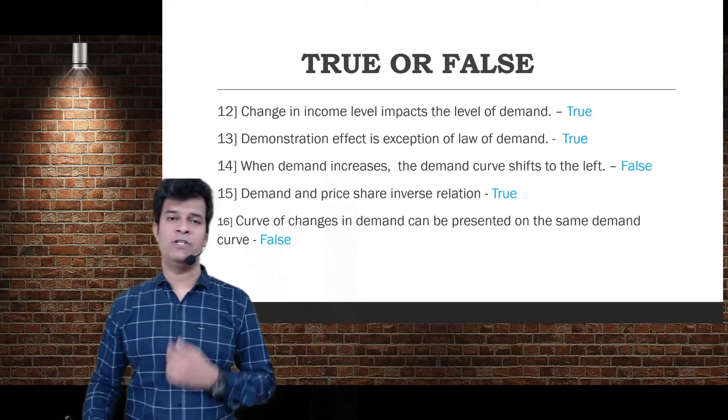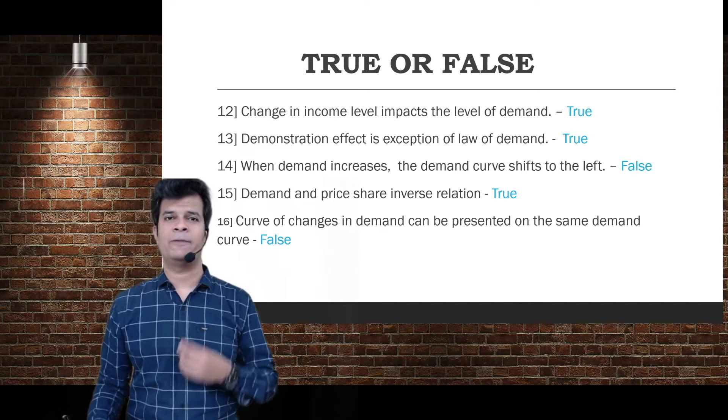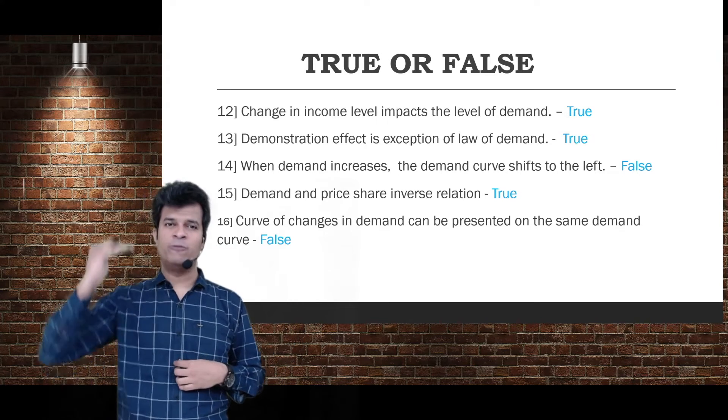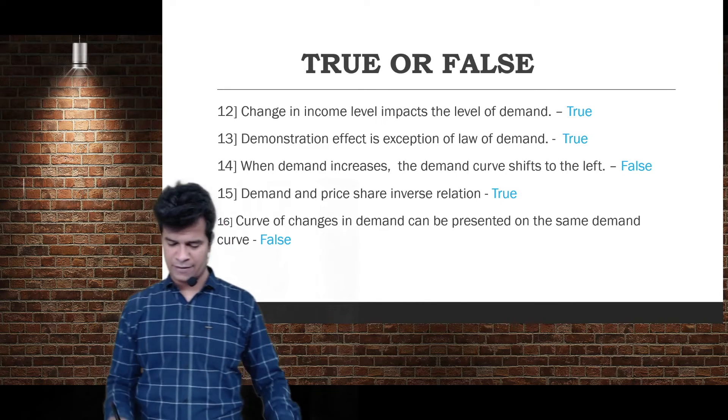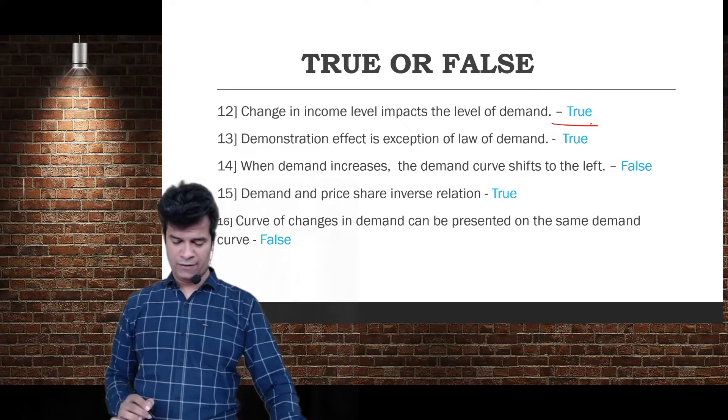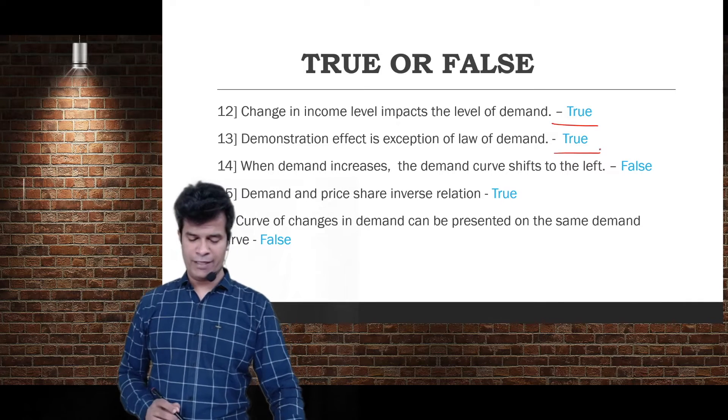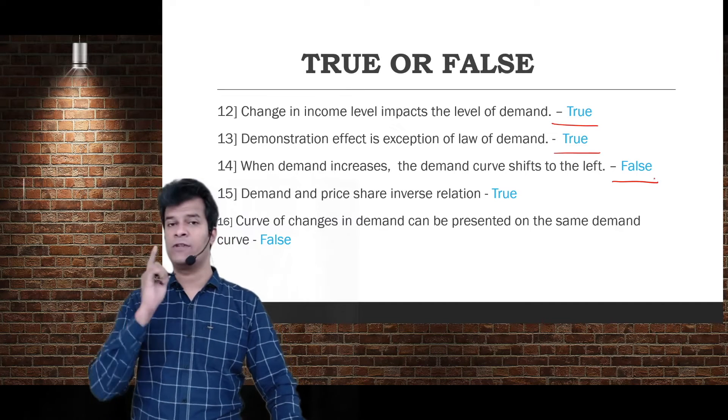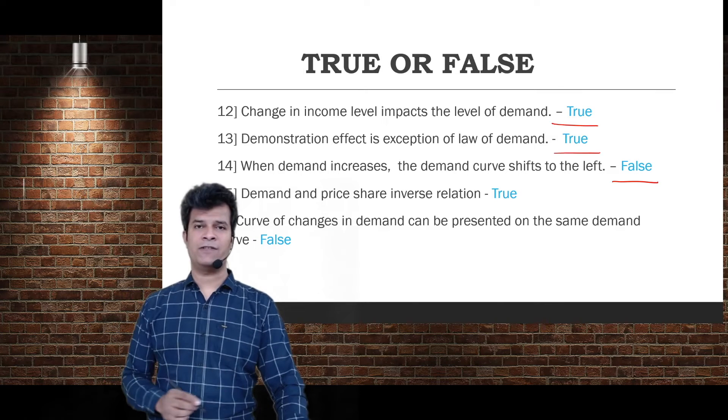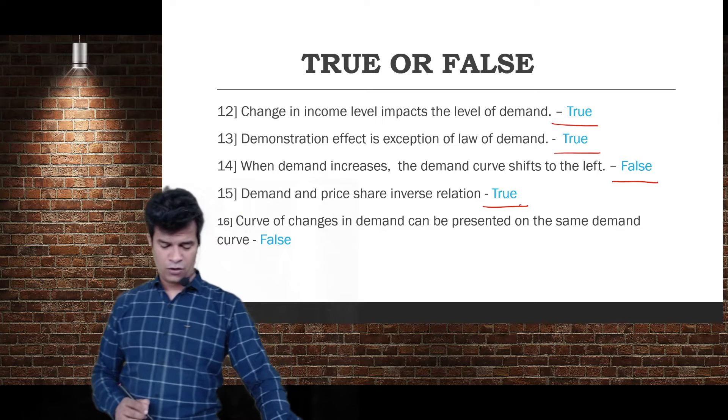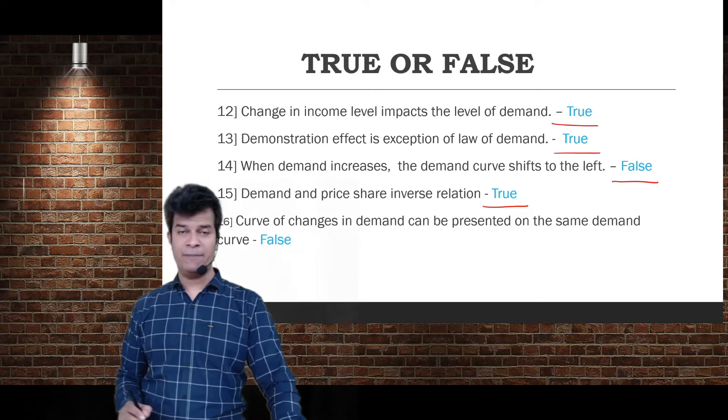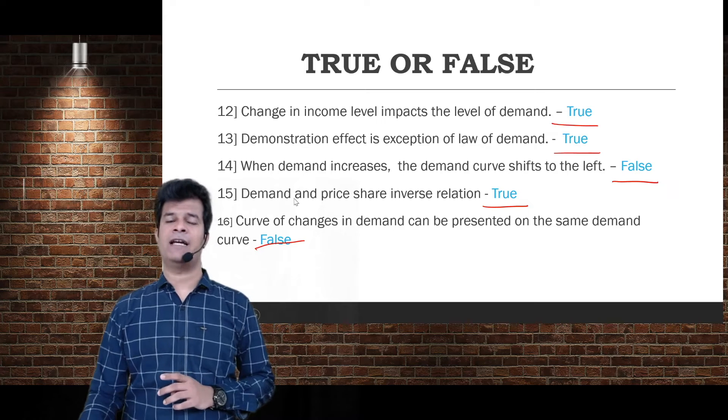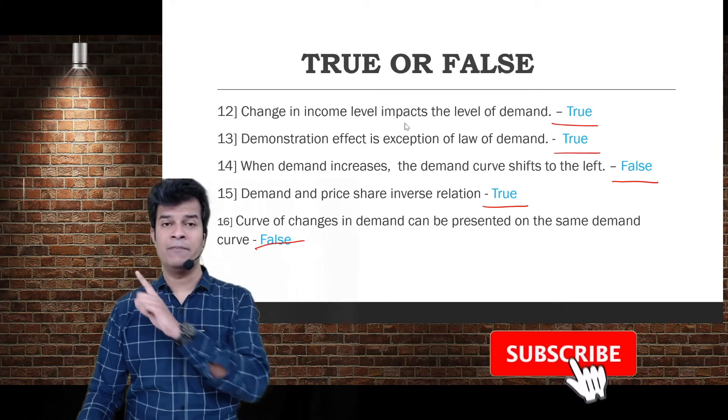Change in income level impacts the level of demand - your income is your purchasing power, your disposable income. If income level changes, it 100% impacts demand. Demonstration effect is an exception to law of demand - true. When demand increases, the demand curve shifts to the left - false, it shifts to right.